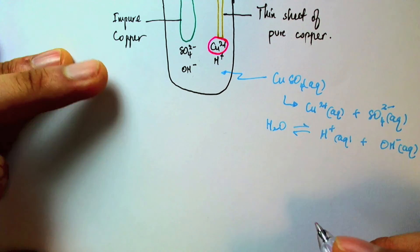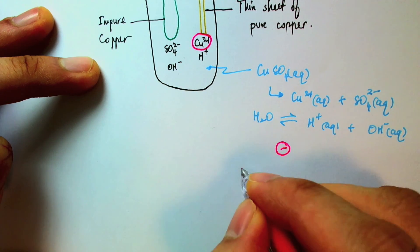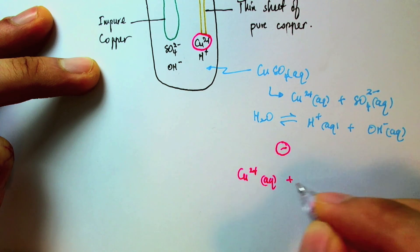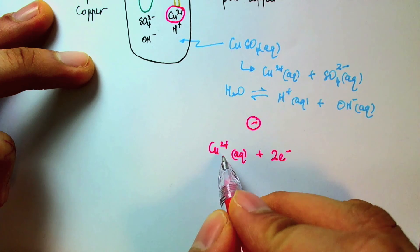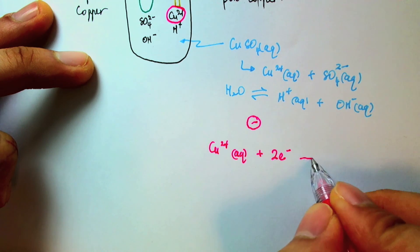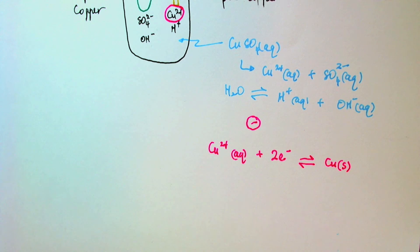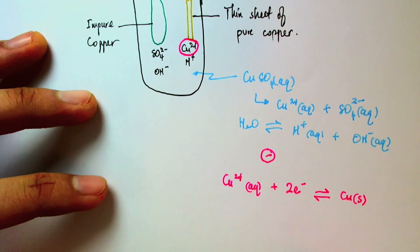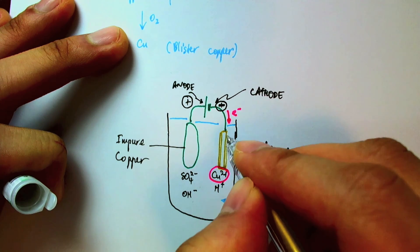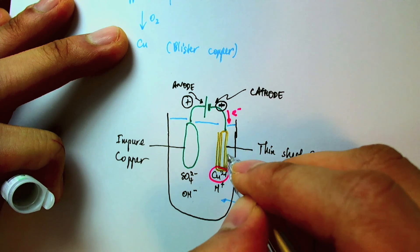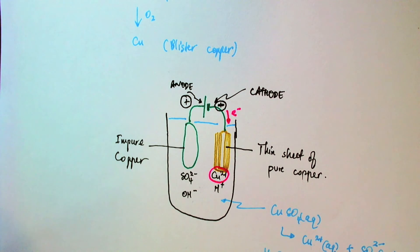So let's go ahead now and write the half equation for what's happening at the cathode. So I will have positive copper ions receiving two electrons from the negative terminal of the battery. So let's go ahead and write the two electrons because we need to neutralize the two positive charges on the copper to form pure solid copper. So this pure copper will stick to the thin sheet of pure copper. And as time goes on, the layers will start building up on this copper cathode. And I'll have more and more pure copper being deposited here.